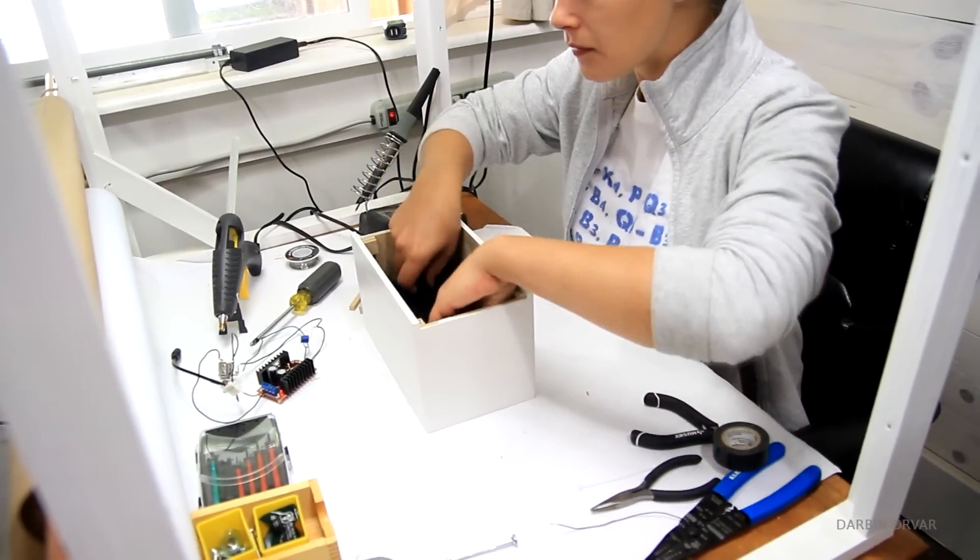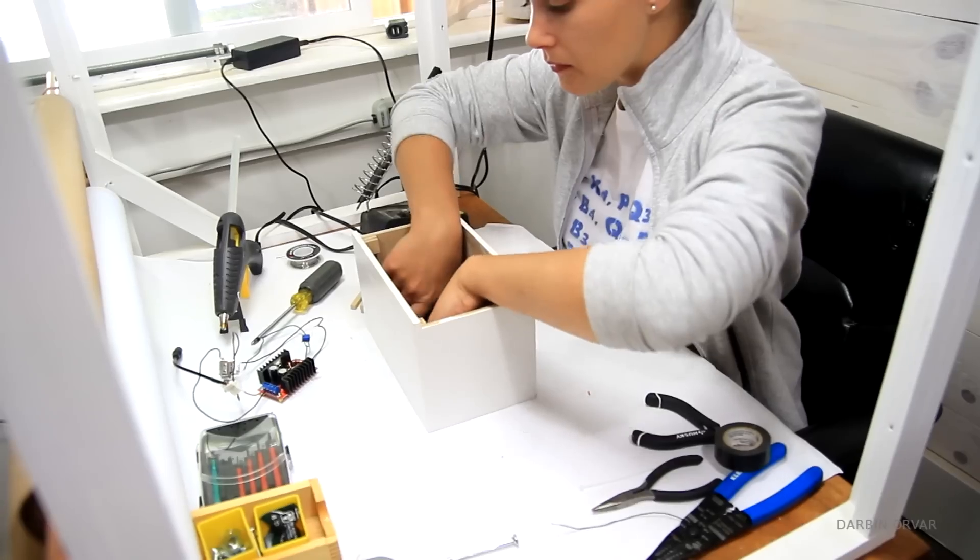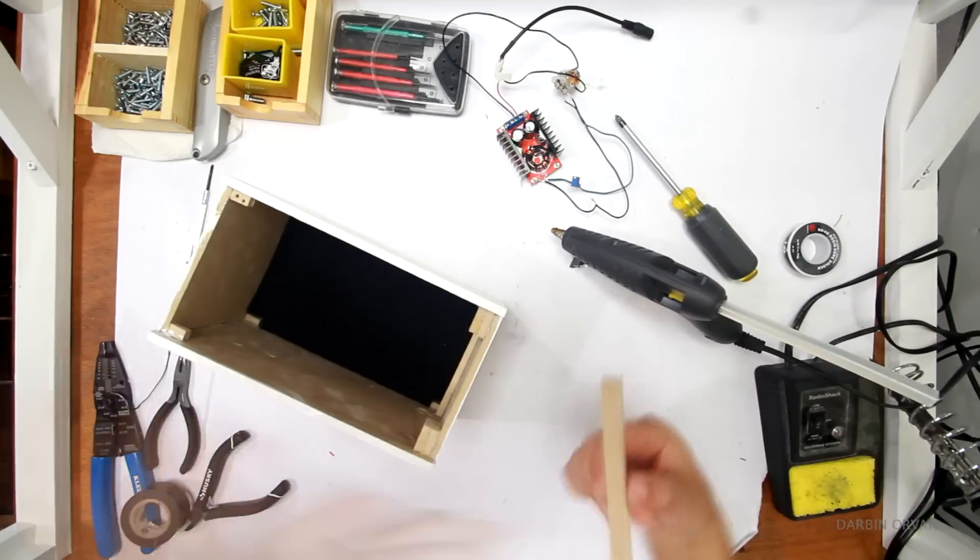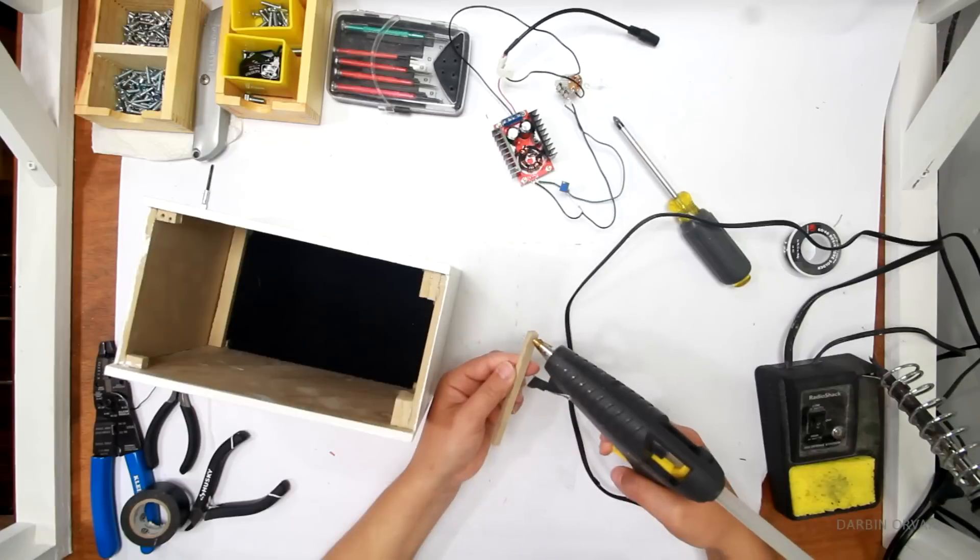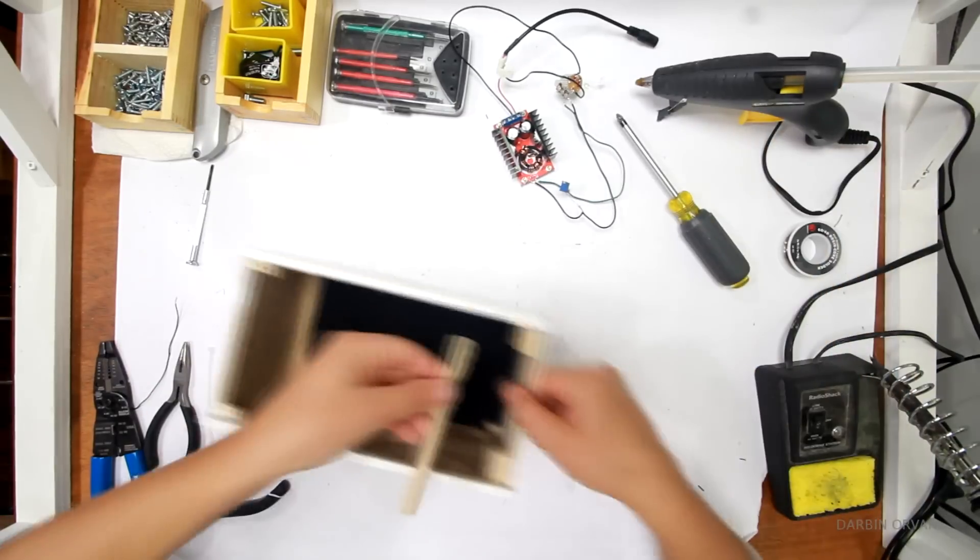Here I'm inserting the filter into the box. I have these thin pieces of MDF I cut up to keep the filter in place, and I'm simply hot gluing those to the support pieces.